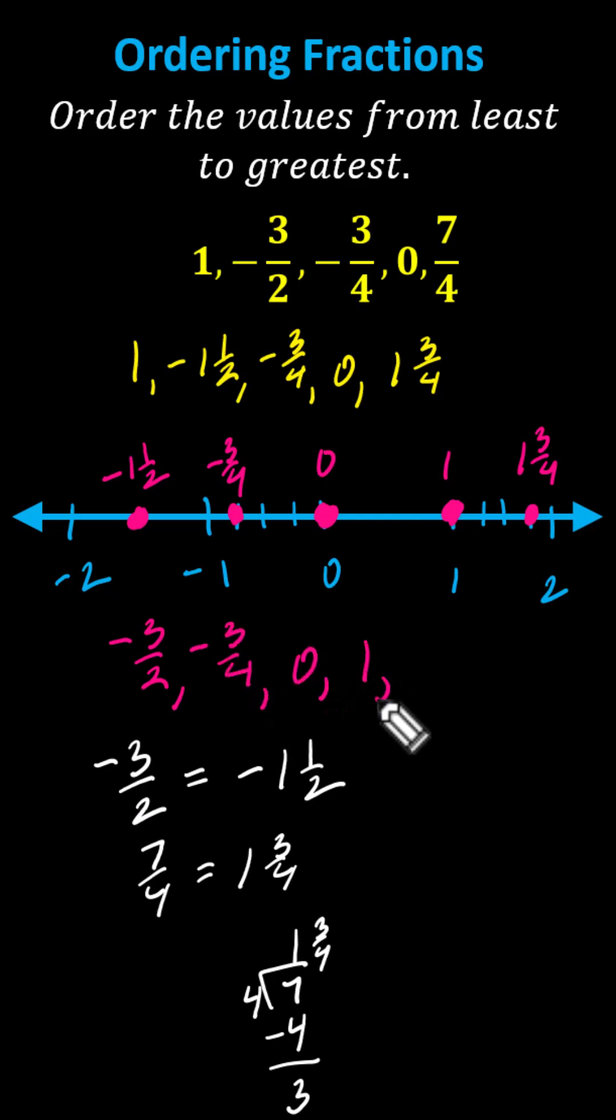0, 1, and 7 fourths. Now we have the values in order from least to greatest. I hope you found this helpful.